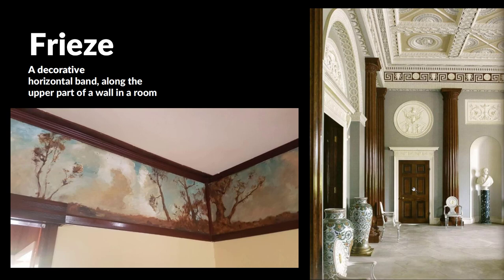Below the crown molding at the very top of the room is the frieze — a decorative horizontal band along the upper part of the wall. The image on the right shows a very traditional space with a frieze area up at the top. These can have very different looks just depending on the era and location of the building.